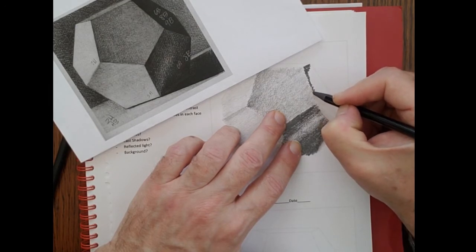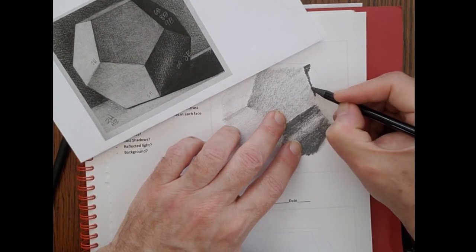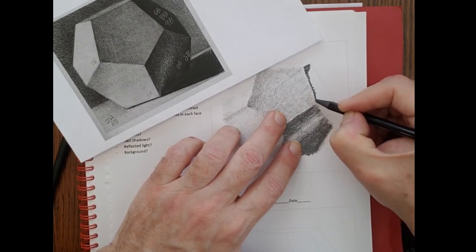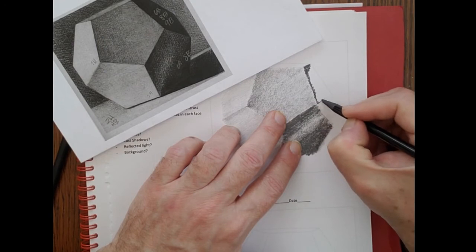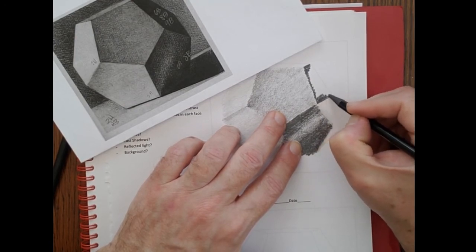So notice I'm not really drawing a line. I'm still going back and forth. I'm just going back and forth really, really short strokes. So I get a nice straight line. And now I can lengthen my strokes a little bit so this doesn't take all day.